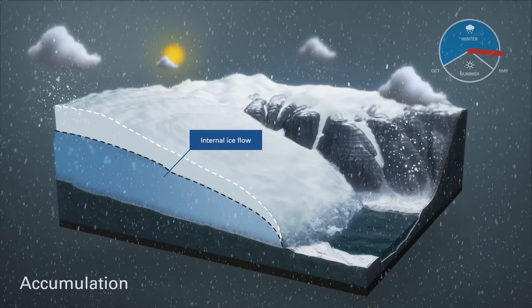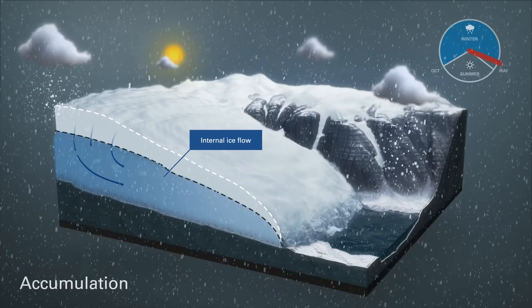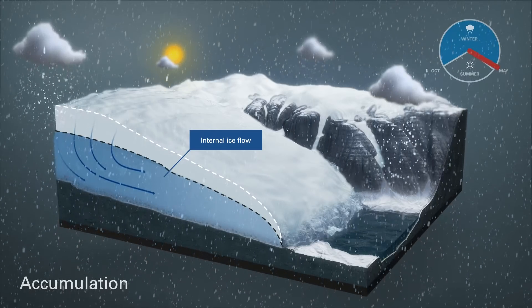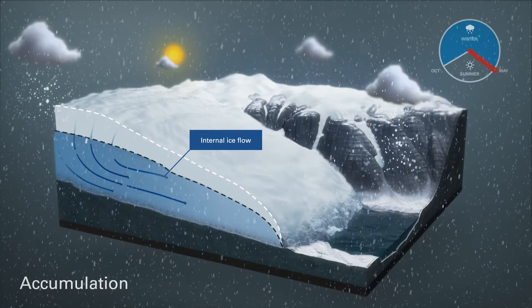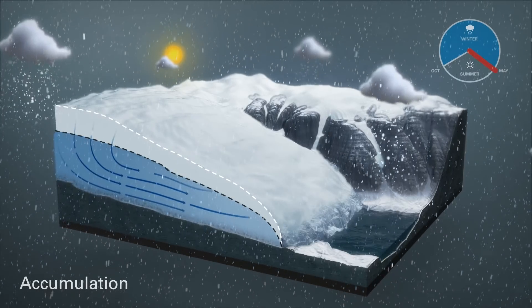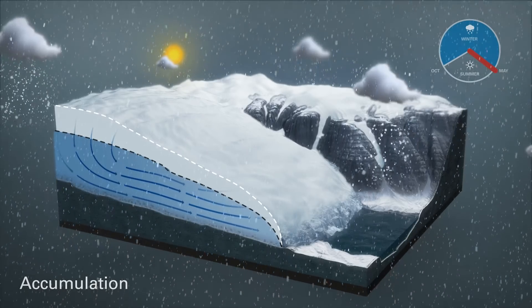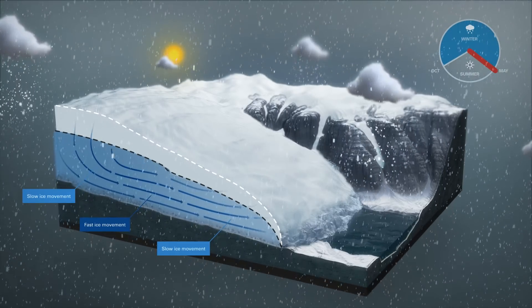The internal ice flow and downhill slippage never stop. The glacier moves under its own weight, displacing mass towards its lower margins.